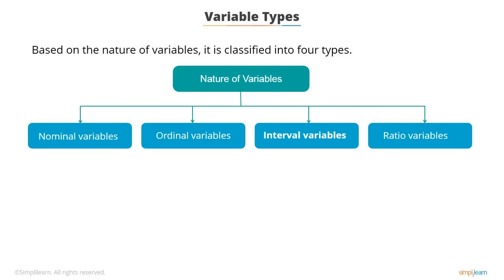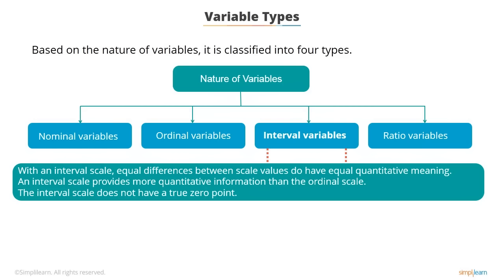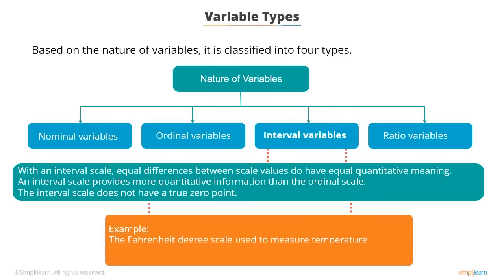Interval variables are similar to ordinal variables, except that the values are measured in a way where their differences are meaningful. With an interval scale, equal differences between scale values have equal quantitative meaning, providing more quantitative information than the ordinal scale. However, the interval scale does not have a true zero point — meaning a value of zero does not represent zero quantity. Examples include the Fahrenheit scale and distance between two compartments in a train.